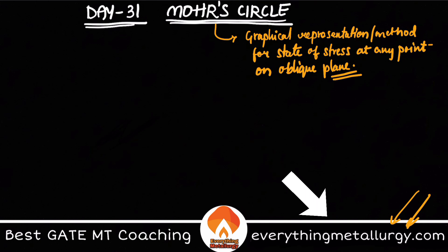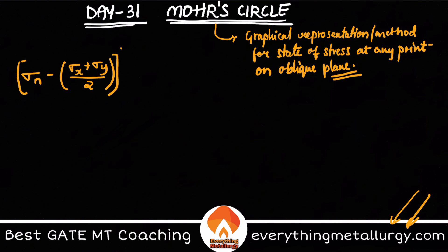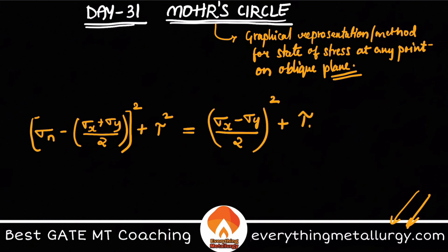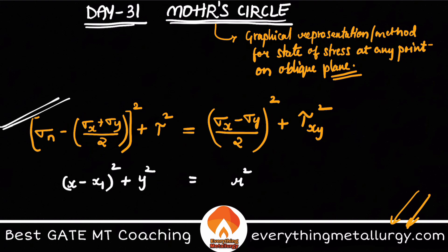The equation you get is: (σn − (σx + σy)/2)² + τ² = ((σx − σy)/2)² + τxy². If you carefully observe, this is in the form of (x − x₁)² + y² = r², which is the standard equation of a circle. This is the equation you get after solving for the state of stress at any point on an oblique plane.